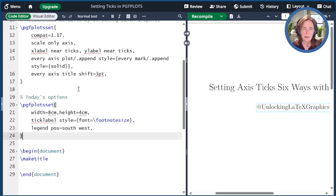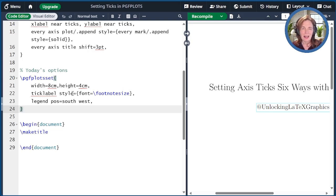I'm going to set the width and height to be 8 by 4 centimeters. I'm setting the font size for the tick labels. And finally, I'm setting the legend position to be in the lower left corner.